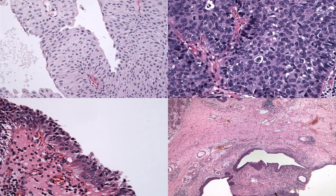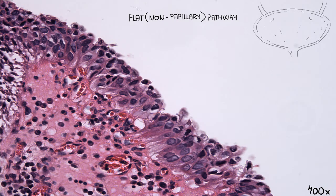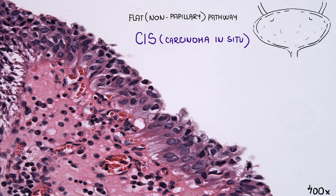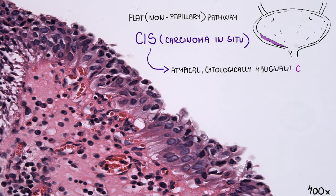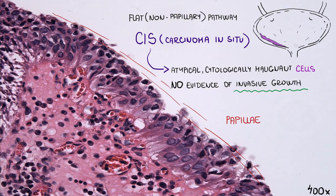Let's proceed to the flat, non-papillary pathway. Urothelial carcinoma in situ, much like any other carcinoma in situ, is defined by the presence of markedly atypical, cytologically malignant cells affecting the whole thickness of the epithelium, with no evidence of invasive growth. In contrast to the papillary pathway, no papillary formation should be seen.